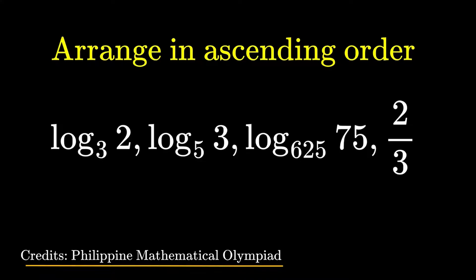Hello, it's Stumplet here. Here's an item on logarithms: arrange the following in ascending order — log 2 with base 3, log 3 with base 5, log 75 with base 625, and two-thirds. Credits to the Philippine Mathematical Olympiad for this item. Pause this video if you'd like to give this item a try, but if you're done, let us dive into the solution.